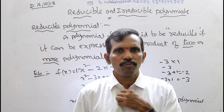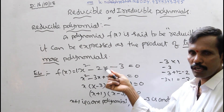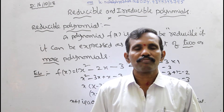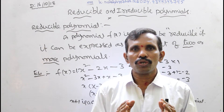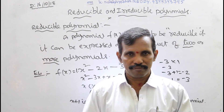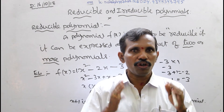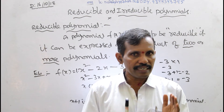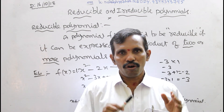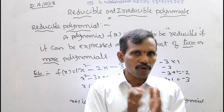In this way, you can take many examples for reducible and irreducible polynomials. x minus 3 is an irreducible polynomial, x plus 1 is an irreducible polynomial, but x squared minus 2x minus 3 is a reducible polynomial — these are opposites of each other. Reducible means a polynomial can be divided into two or more polynomials, expressed as a product of two or more polynomials. Irreducible means a polynomial cannot be expressed as the product of two or more polynomials.